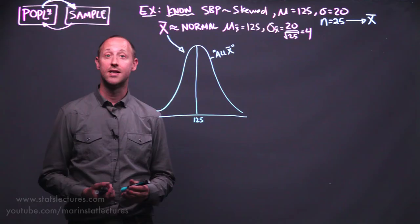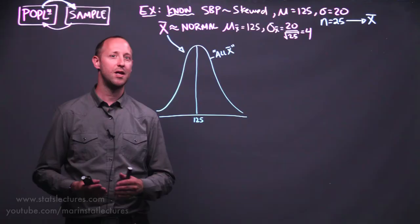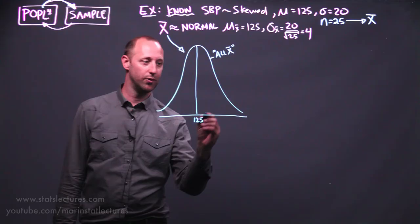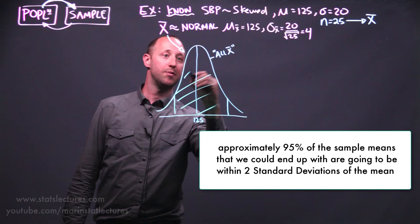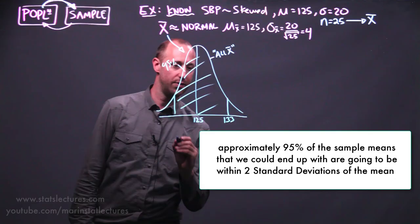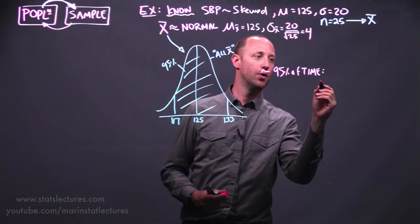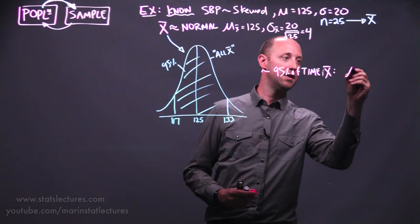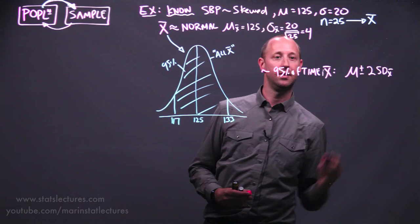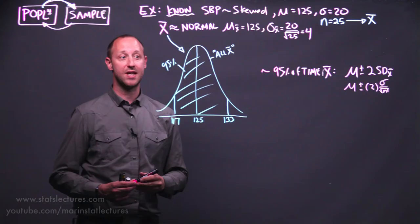We've also learned about the 68-95-99.7 rule. For this video, I'm going to focus on two standard deviations and 95%, although these ideas can generalize to any number of standard deviations or percentage. Using that two standard deviations, 95% rule, we know that approximately 95% of the sample means we could end up with are going to be within two standard deviations of the mean — between 117 and 133. Roughly 95% of the time, we're going to get a sample mean within plus or minus two standard deviations of the mean.